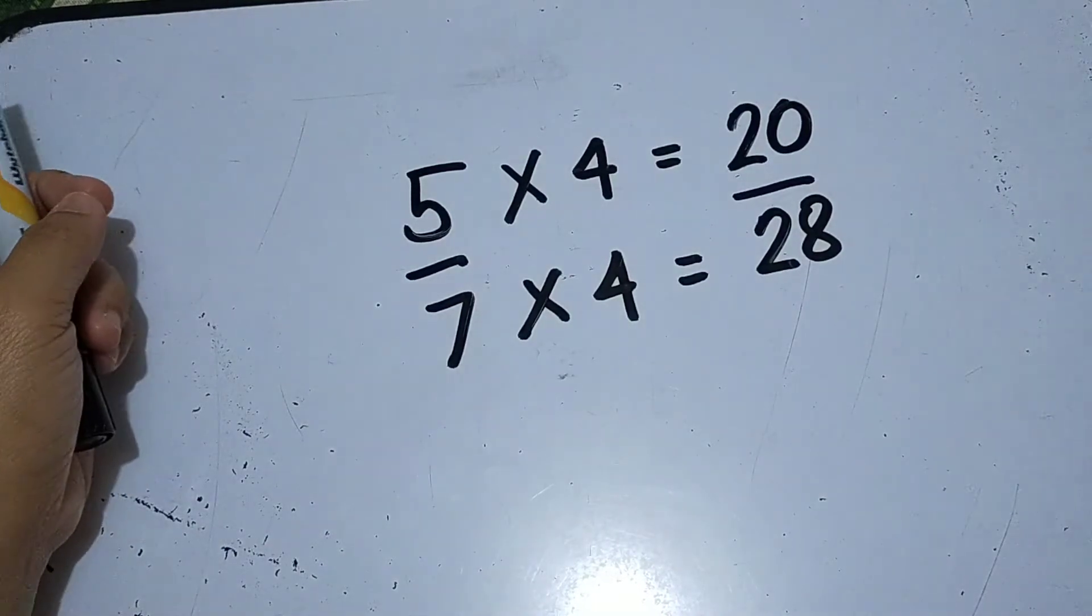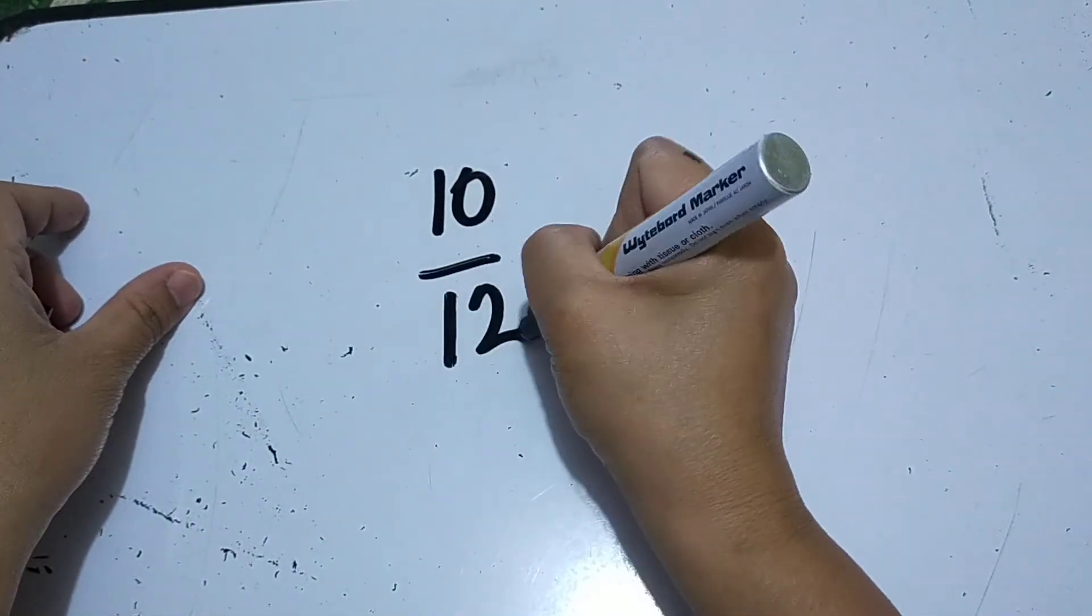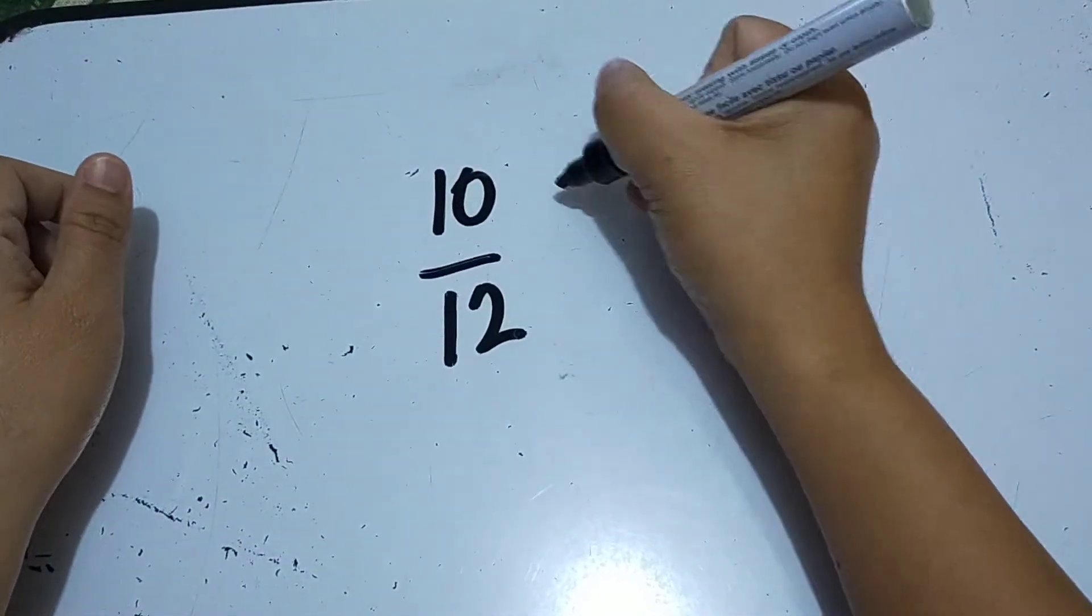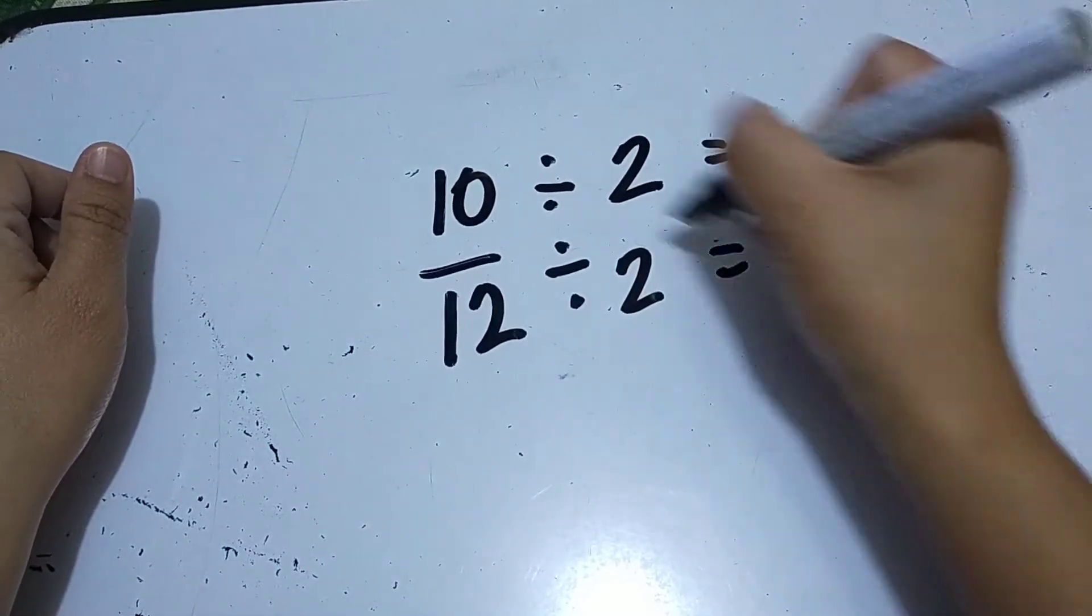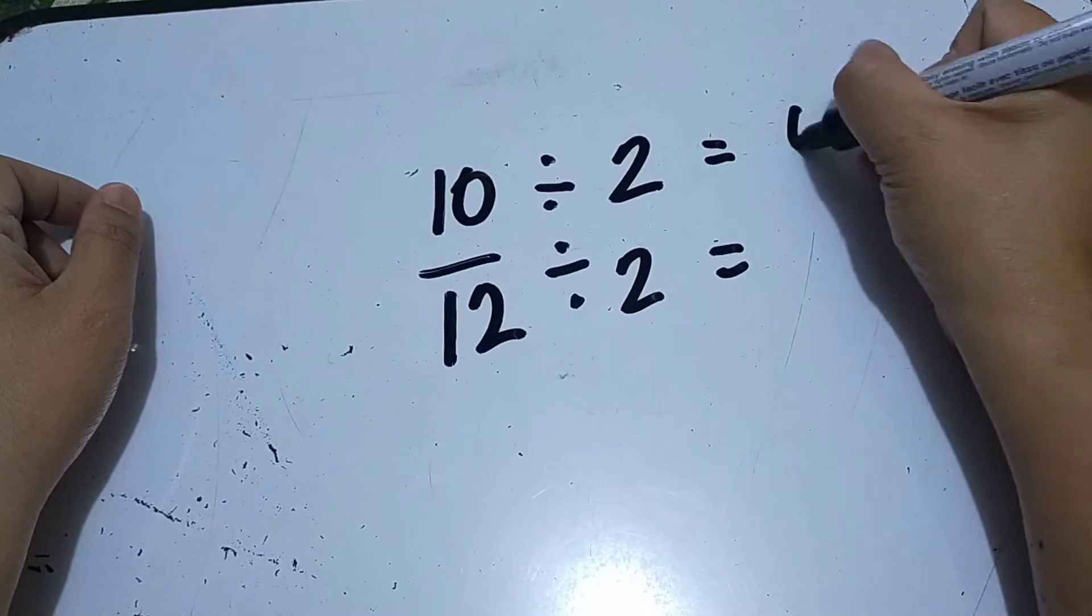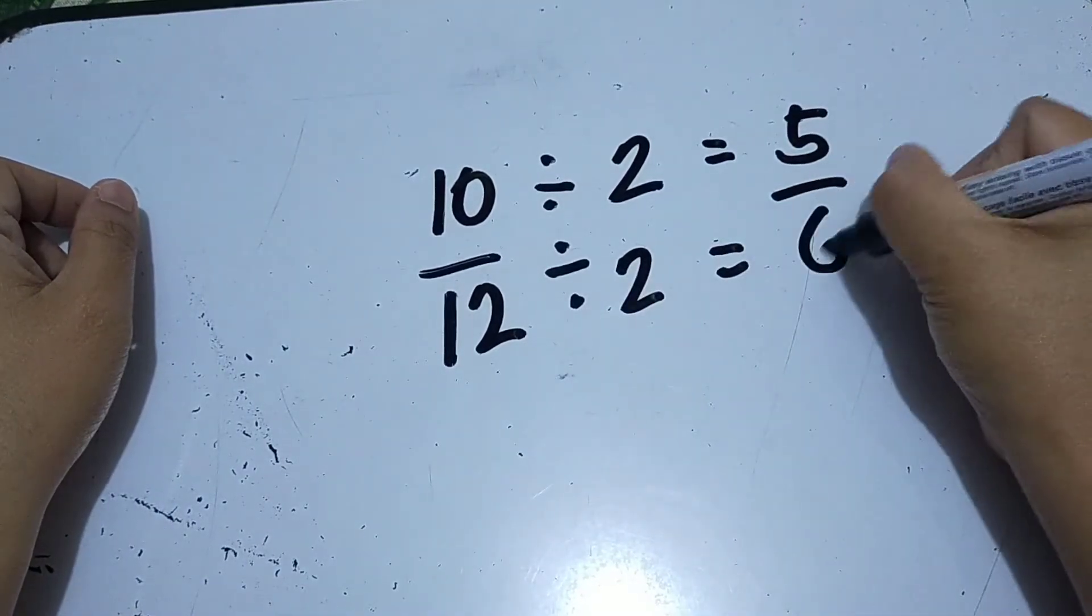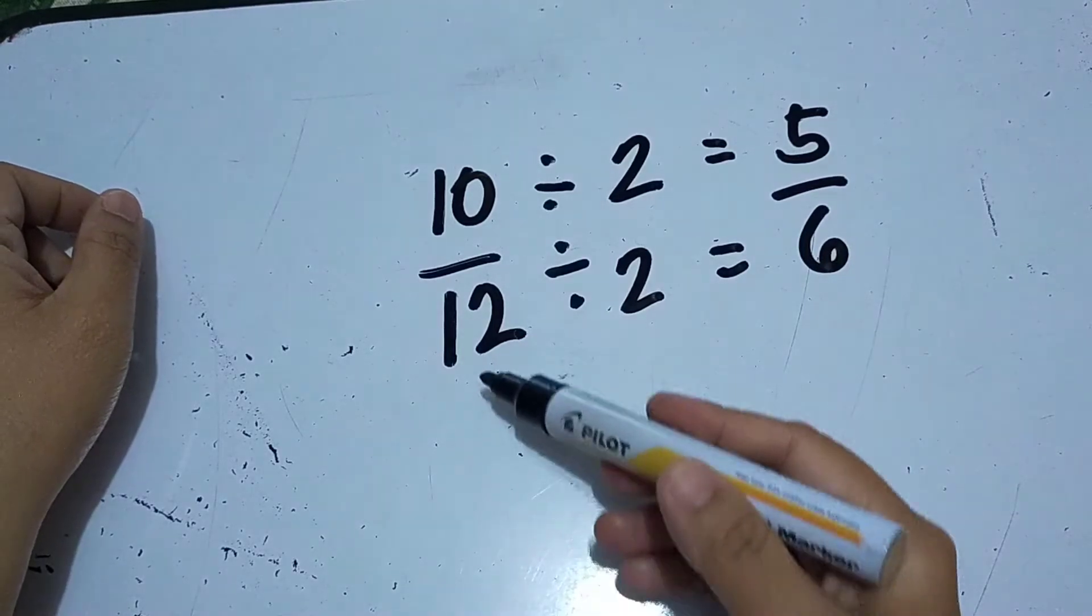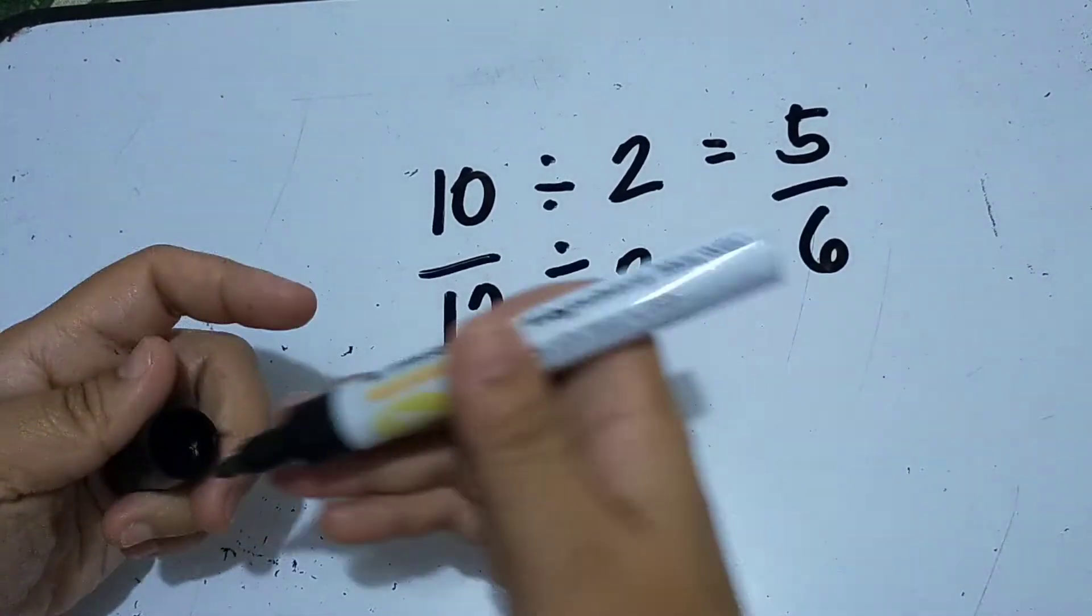We can also do this. So let's say, 10 over 12. If earlier we multiplied, you can also divide. 10 divided by 2 is 5, 12 divided by 2 is 6. So therefore, the equivalent ratio of 10 over 12 is 5 over 6.